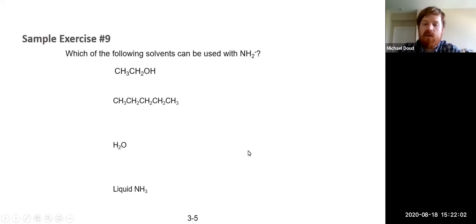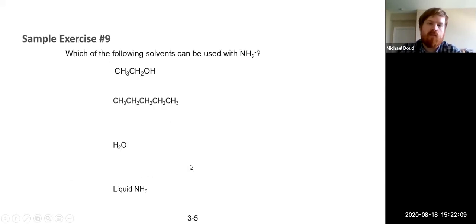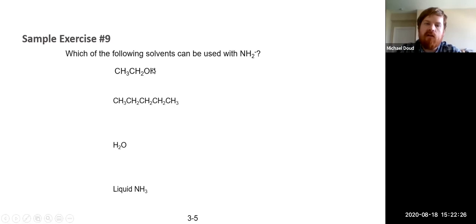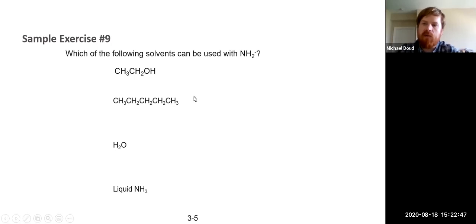So what solvent would be a good choice for that reaction? One good choice could be ammonia itself. That brings us to sample exercise nine: which of the following solvents could be used with NH₂⁻? The solvents listed are ethanol, pentane, water, and ammonia. To answer this, draw a proton transfer reaction involving each solvent and figure out which position of equilibrium is favored — the products containing the leveled base, or the reactants containing our NH₂⁻. Pause the video here and try to come up with your answers, and we'll work through it together in the sample exercise video.